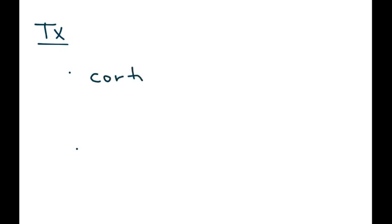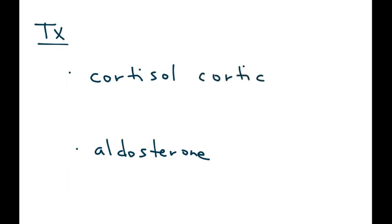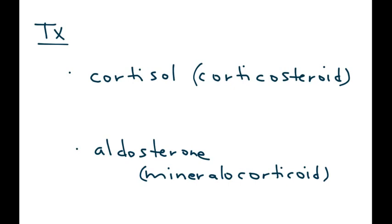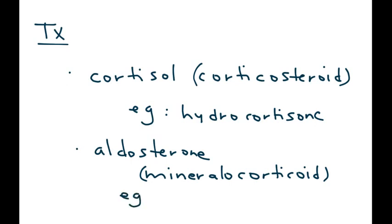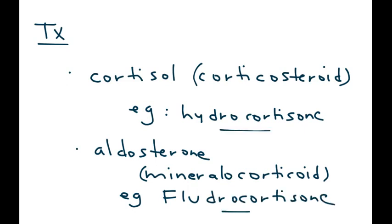Treatment of CAH involves replacing the two vital hormones not produced in adequate amounts: cortisol and aldosterone. Cortisol is a corticosteroid, and aldosterone is a mineralocorticoid. The medications most commonly used are hydrocortisone for corticosteroid replacement and fludrocortisone for mineralocorticoid replacement.